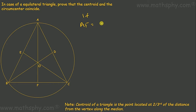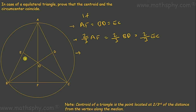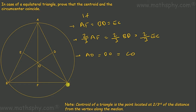If AF equals BD equals EC, then two-thirds of AF equals two-thirds of BD equals two-thirds of EC. From the properties of a triangle, we know the centroid is located at two-thirds of the distance from the vertex along the median. So AO is two-thirds of AF, BO is two-thirds of BD, and CO is two-thirds of CE.